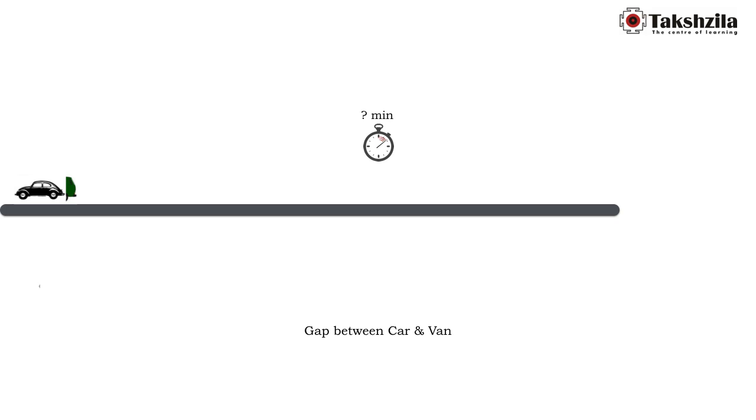At what rate is this gap going to reduce? The car is chasing at a higher speed of 72, whereas the van is going away trying to escape, but the car is faster. How much does it catch on? It catches on at 72 minus 36, that is 36 kilometers per hour.